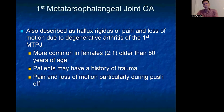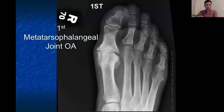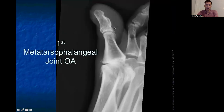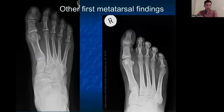The last topic we're going to discuss is first metatarsophalangeal joint arthritis — a very common cause of first MTPJ pain, more common in females and as you get older in age. On this blown-up dorsiplantar view, we see subchondral sclerosis, loss of joint space, and bridging osteophytes. On the lateral view we see the same: osteophytosis, loss of joint space, and subchondral sclerosis. Things we also want to make sure we don't miss: a periarticular erosion on the left, and a fractured sesamoid on the right — conditions we want to keep an eye out for as well.